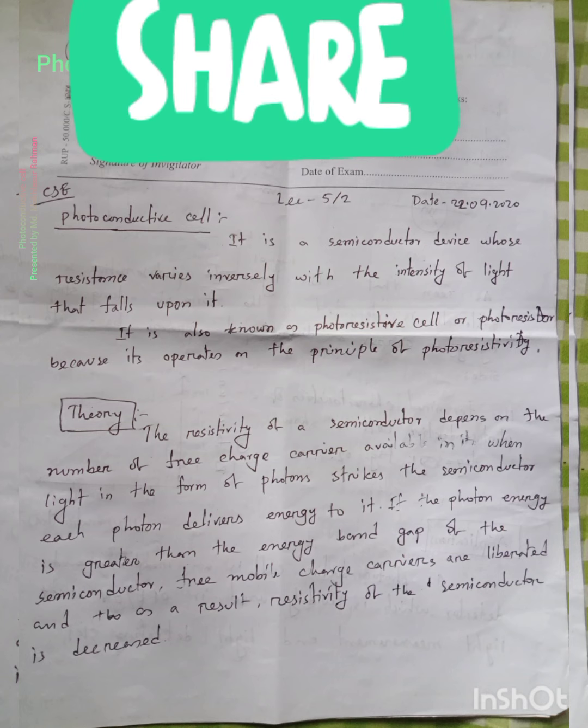It is a semiconductor device that has light intensity and conductivity. It is a semiconductor device whose resistance varies inversely with the intensity of light that falls upon it.